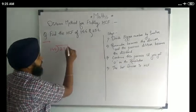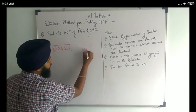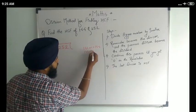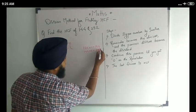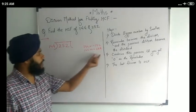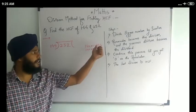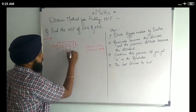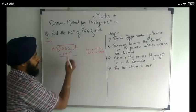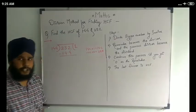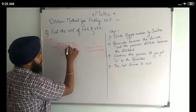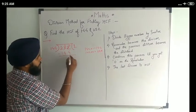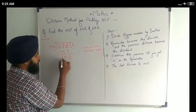Here we have to divide. 144 ones are 144. 144 twos are 288. Here 288 is greater than 252, so we will take 144. Subtracting: 2 minus 4 is not possible, so we borrow. It becomes 4 and this becomes 12. 12 minus 4 is 8. 4 minus 4 is 0, and 1 minus 1 is 0. So the remainder is 108.